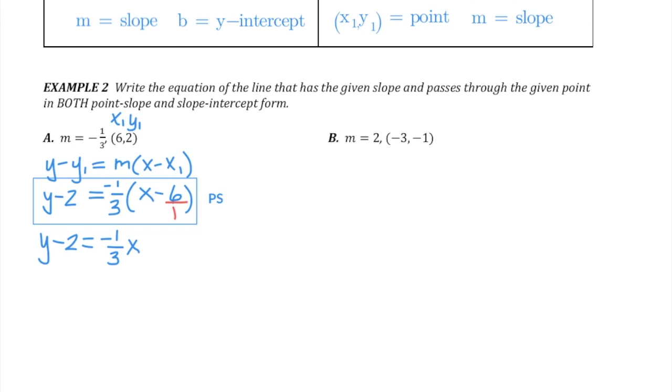That means multiply the numerator times the numerator and the denominator times the denominator. So we have a minus 1 times a minus 6, which will become a positive 6. And on the bottom, we have 3 times 1, which is 3. Now that constant term can be reduced. 6 divided by 3 is, of course, 2. So I'm going to fix that.